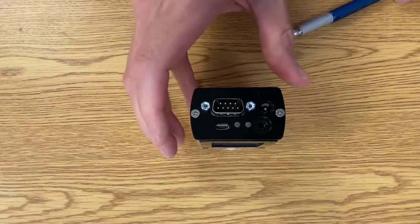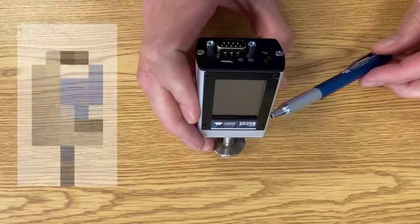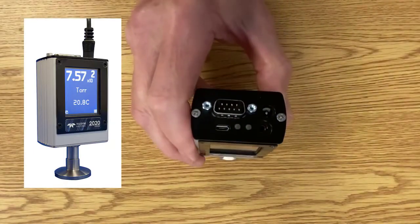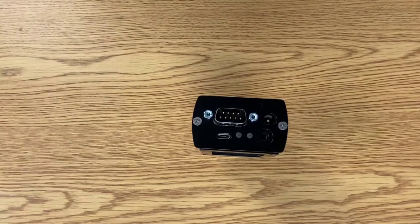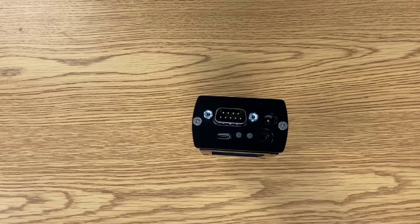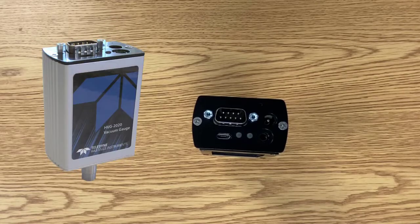And you will notice that this gauge has the optional color touchscreen display. The display can be very handy because it allows us to see graphically how our pump down and vent cycles are progressing, but we can also provide the gauge without the display.